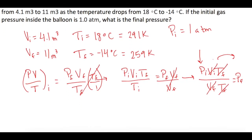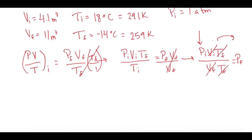Now let's plug everything in. P_initial is 1 atmosphere, V_initial is 4.1 meters cubed, T_final is 259 Kelvin. Make sure you change it to Kelvin, it won't work right if you don't. V_final is 11 meters cubed, and T_initial is 291 Kelvin.